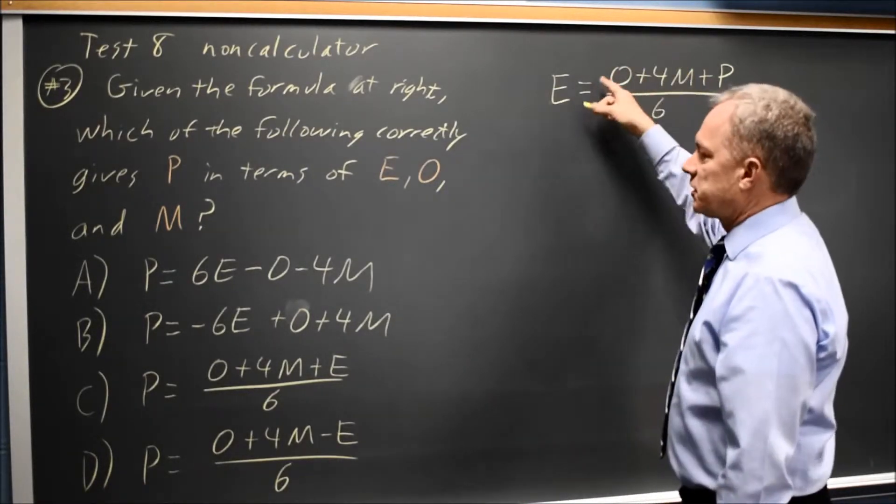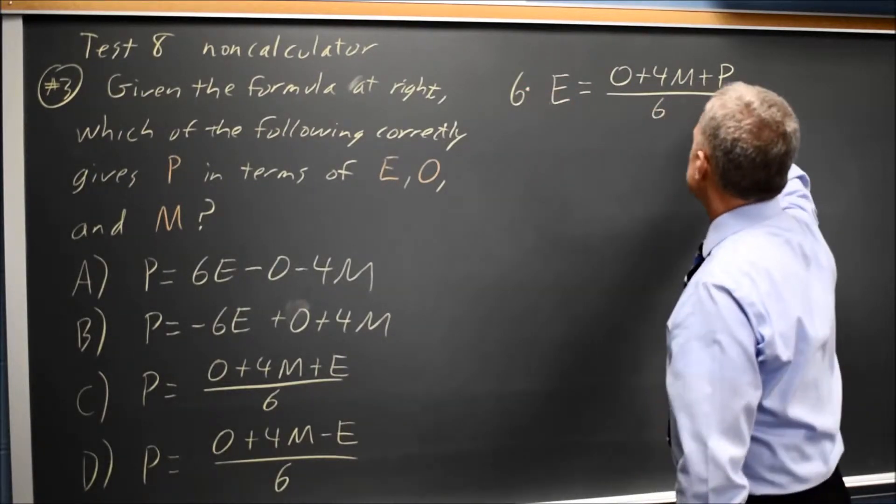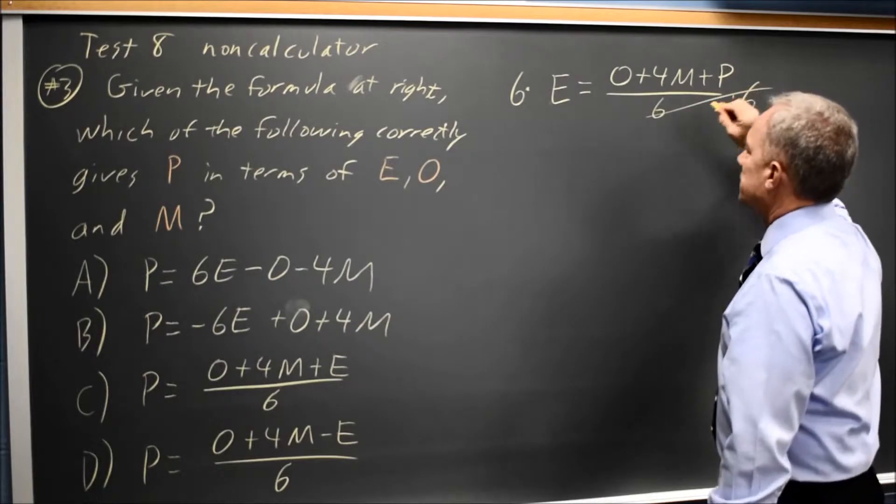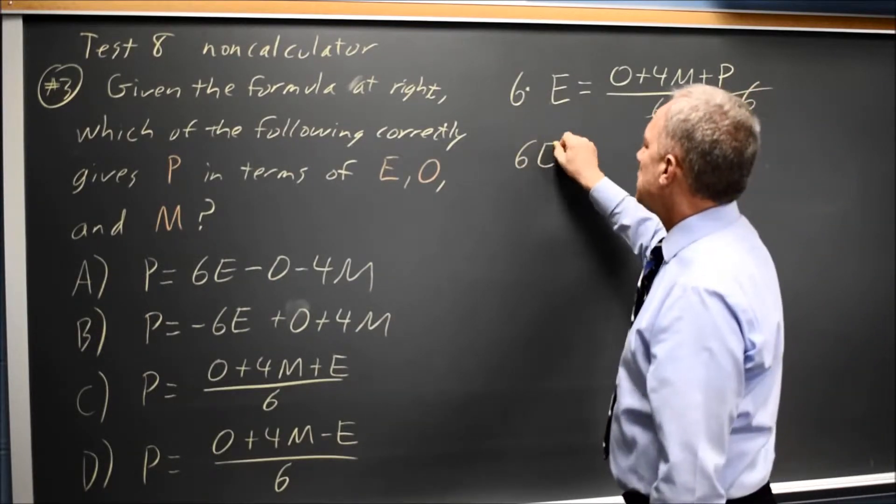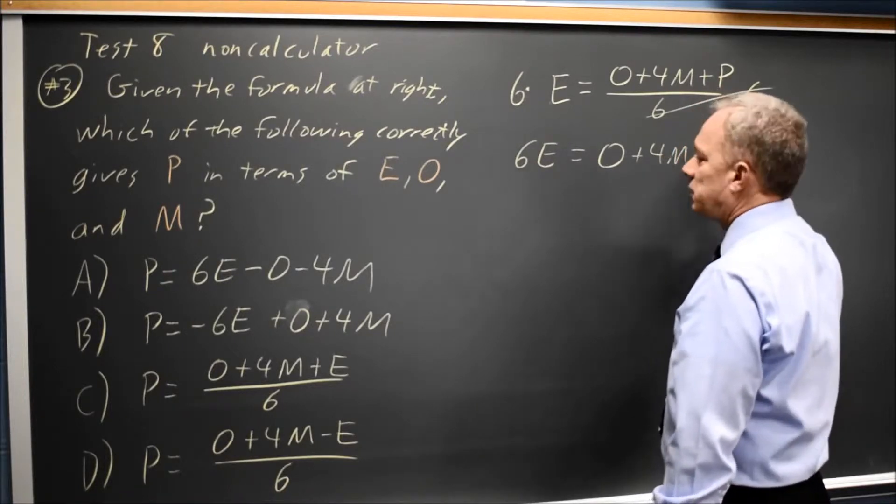Since our expression that contains P is divided by 6, I'm going to multiply both sides by 6. 6 over 6 cancels, that's 1, leaving 6E equals O plus 4M plus P.